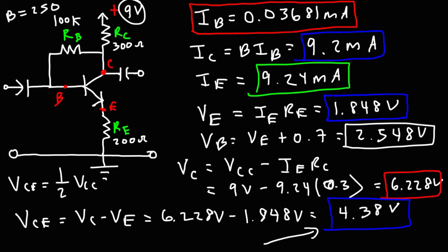So that's it for this problem. Now you know how to solve the collector feedback bias circuit with an emitter resistor added to it. Thanks for watching.